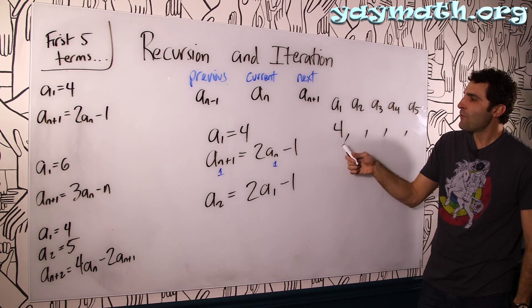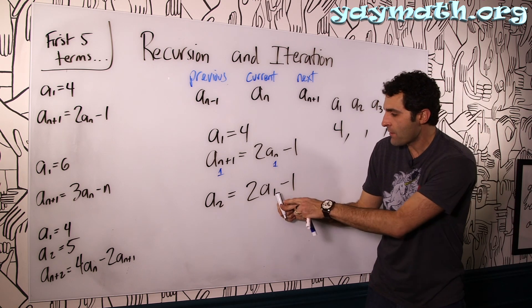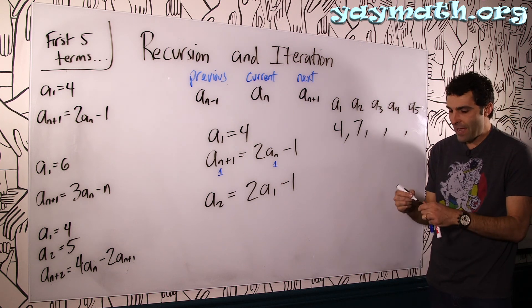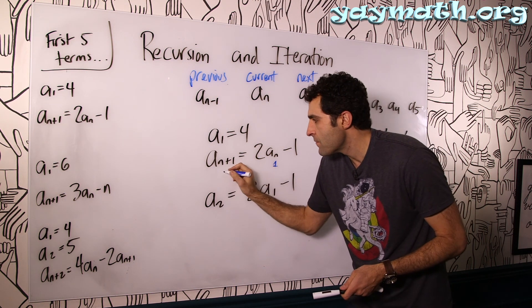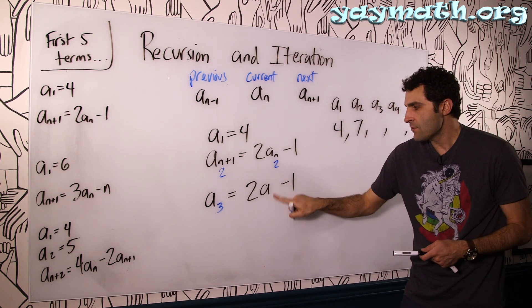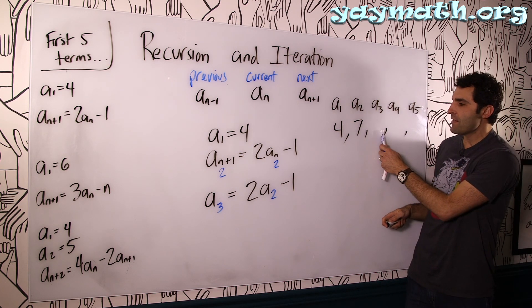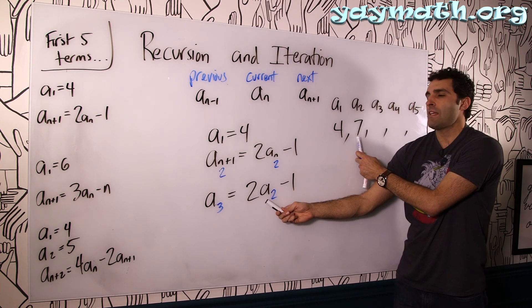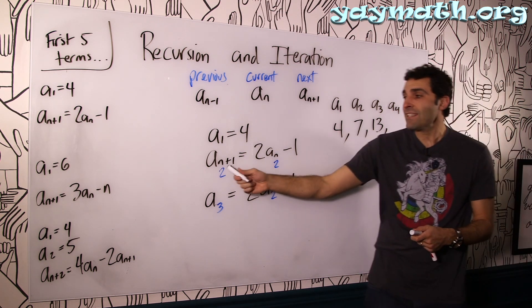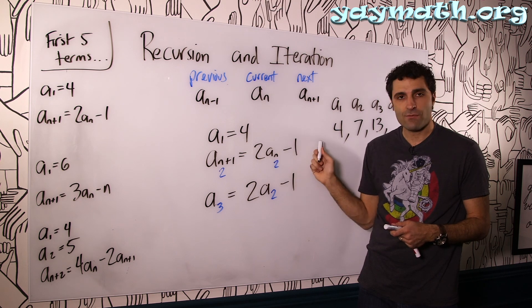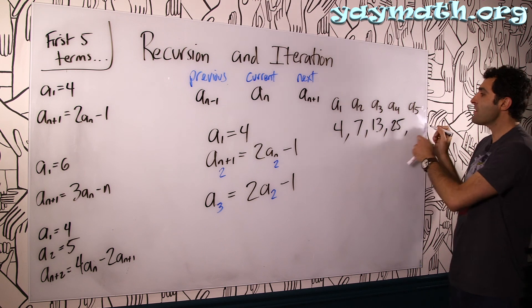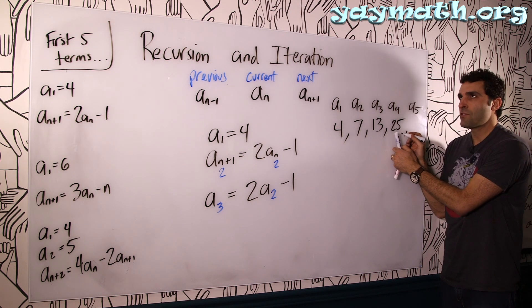Continuing: a2 = 7. For a3, set n = 2: a3 = 2·a2 − 1 = 2·7 − 1 = 14 − 1 = 13. For a4: 2·13 = 26, minus 1 is 25. For a5: 2·25 = 50, minus 1 is 49. The pattern is simply: next term equals 2 times current term minus 1, repeated over and over.